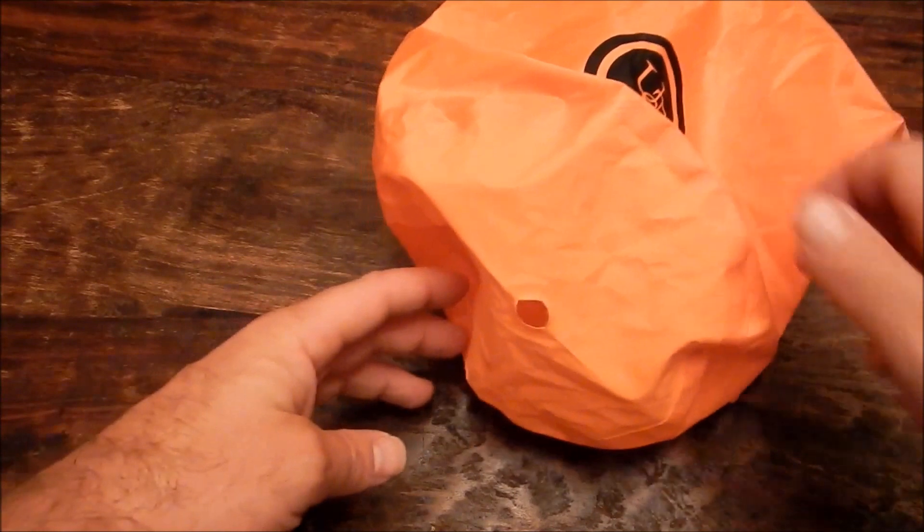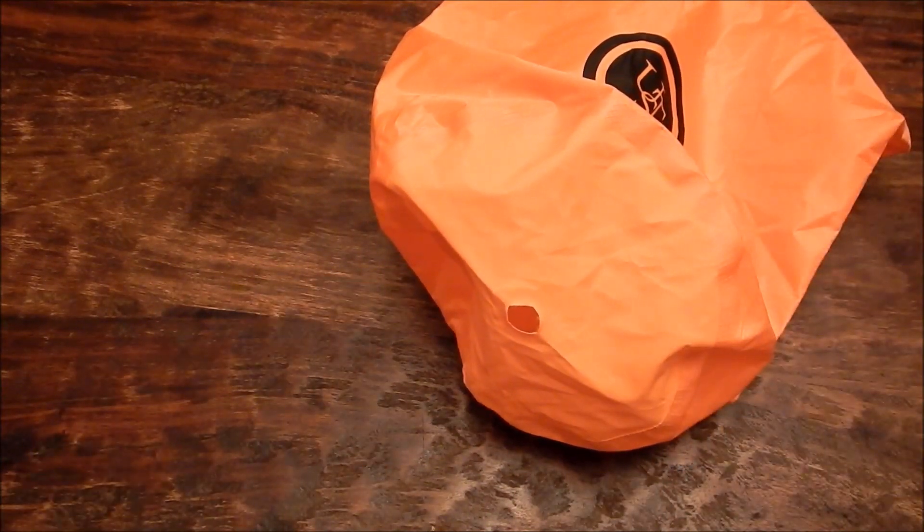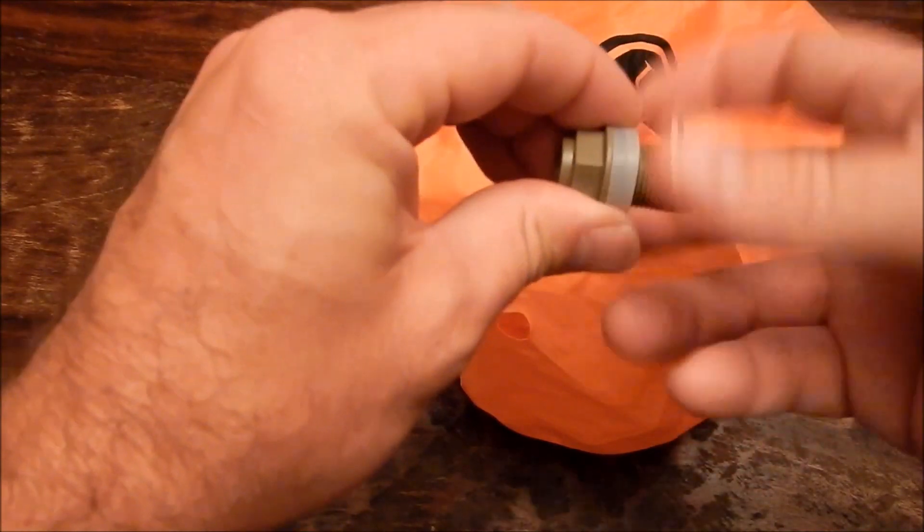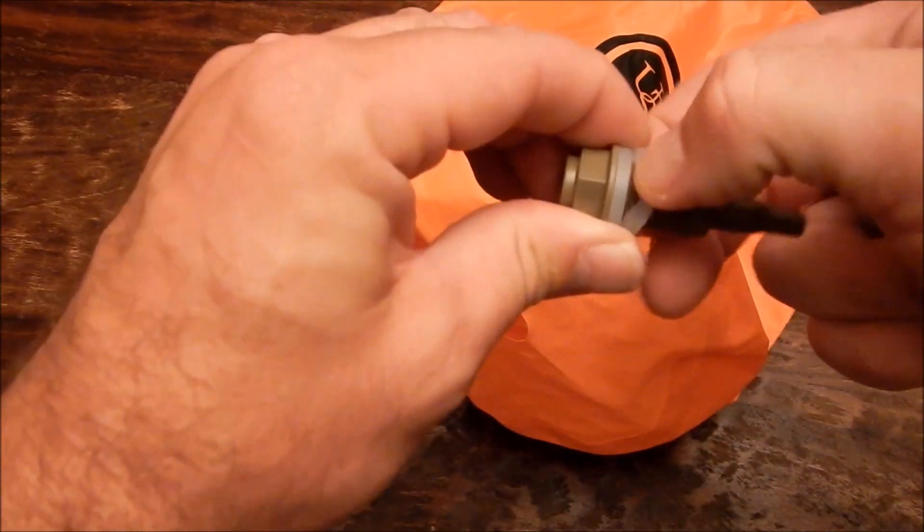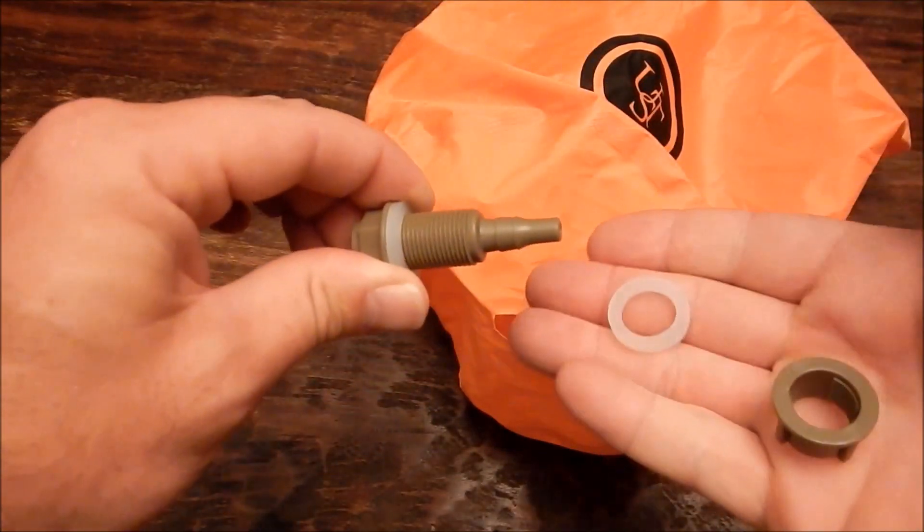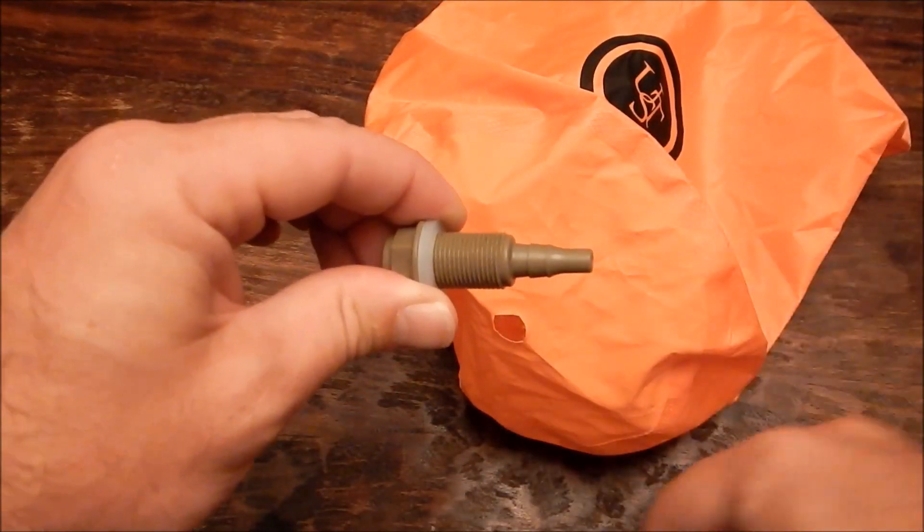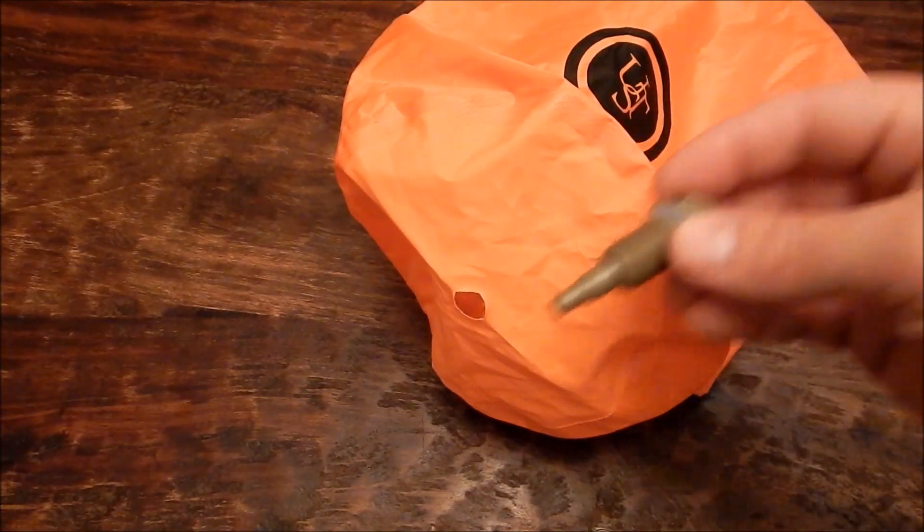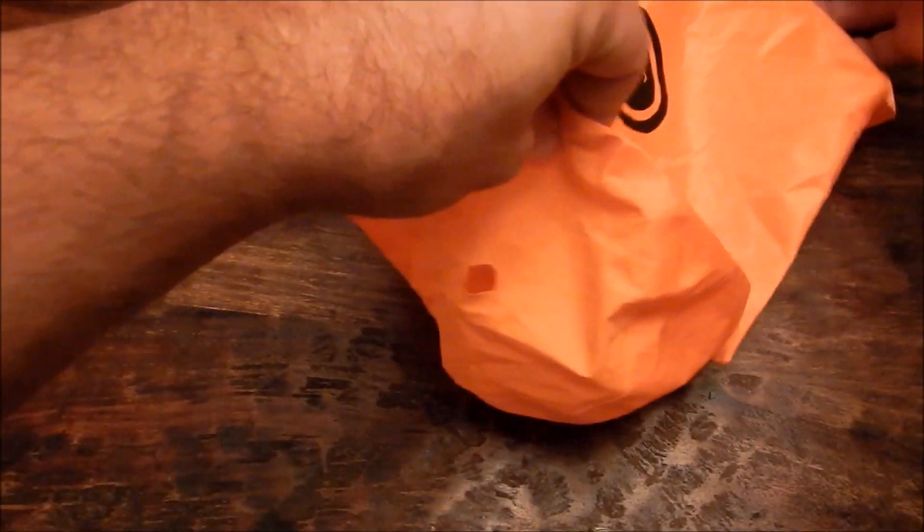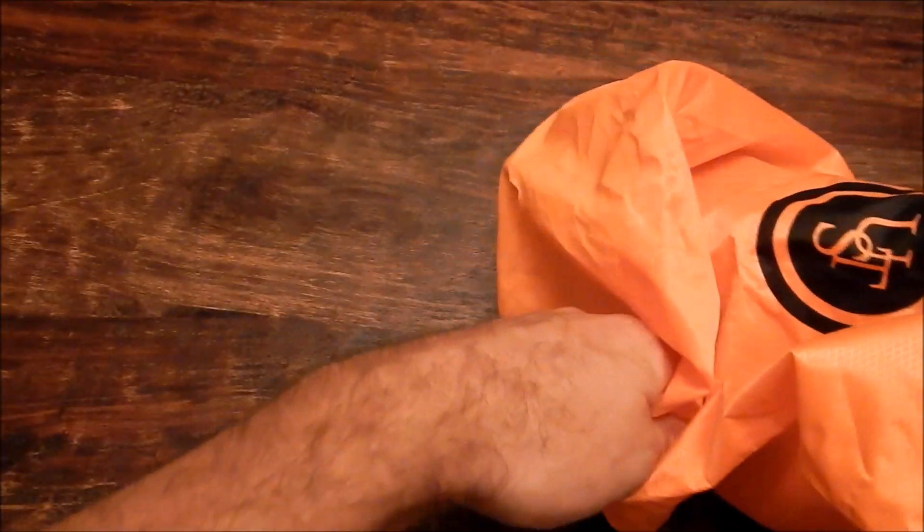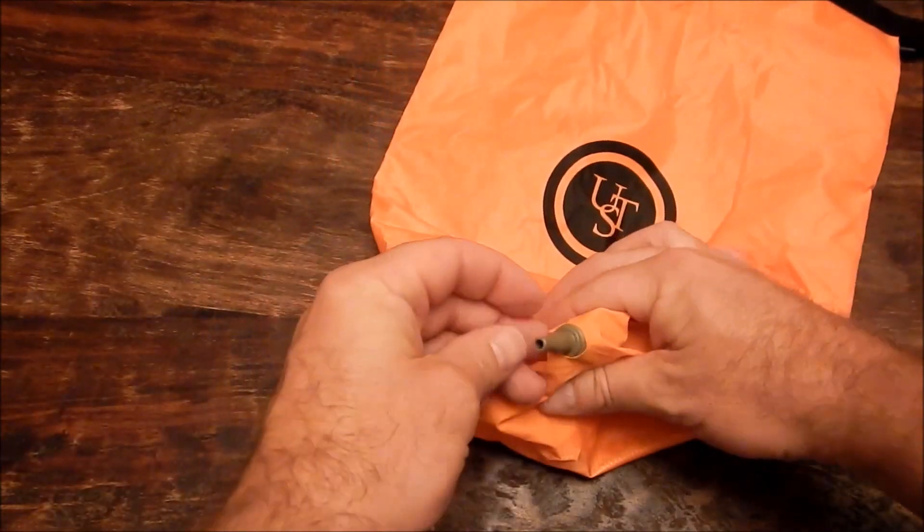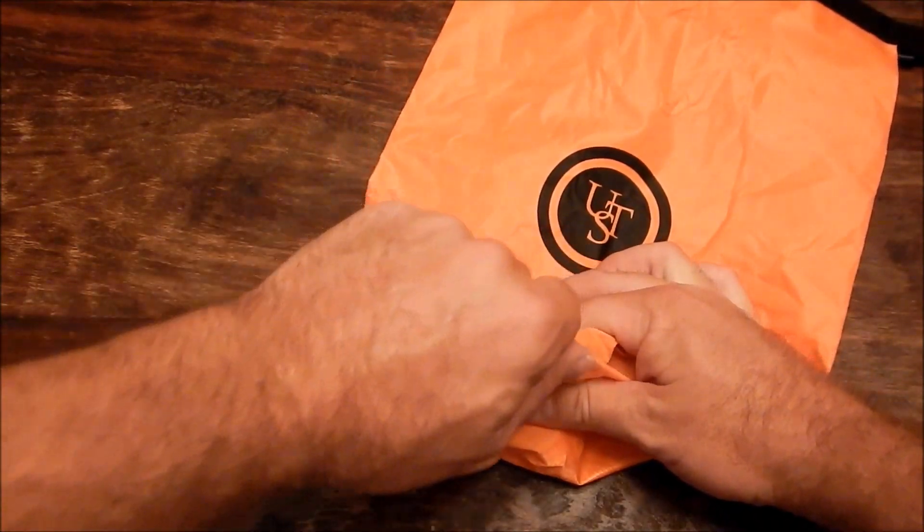You're going to take your bulkhead adapter or your bulkhead connection and take it apart. You're going to take off one of the silicone gaskets and then you're going to take this piece. You're going to go inside the bag and feed it through that hole. And it's nice if you cut it kind of small, then when you pull it through it's a little tight.